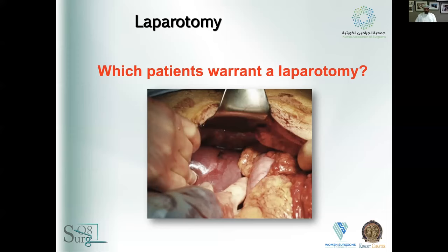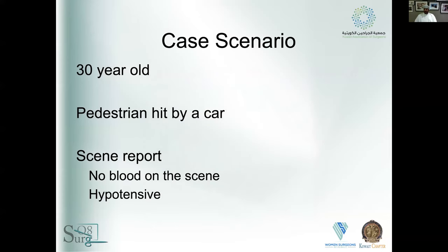Which patients warrant a laparotomy? From your responses: hemodynamically abnormal patients — and let's be precise, we don't use the word 'unstable.' A patient is either hemodynamically normal or hemodynamically abnormal. The most stable patient in a hospital is a dead patient — blood pressure and pulse don't change. Other correct answers: hypotensive with positive FAST, abnormal hemodynamics, evisceration, and unresponders — hemodynamically abnormal despite resuscitation.